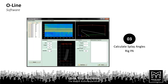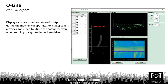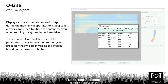You then hit the Optimize button and the software works out the optimum display angles for the array. We then optimize electronically, first selecting which resolution we wish to run the system at. It's always a good idea to utilize the software to ensure you're getting the most out of the system before you start tuning it. When you come to the EQ tab, the software also calculates a set of IIR parameters that can be added to the system processor, aiding in voicing the system based on the architecture of the array.